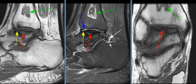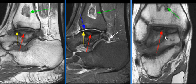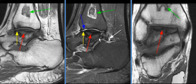There is synovitis adjacent to the os trigonum. An infarct is also seen in the distal tibia. The MRI findings are consistent with avascular necrosis of the talar dome.